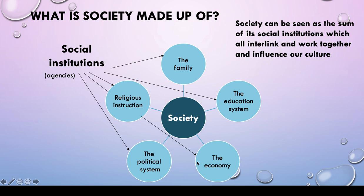This all contributes to the economy. We are in a capitalist system — how does that make us believe what we do in the family? For example, in America you have the American dream: you work hard and you're going to achieve it. Society can be seen as the sum of its social institutions, which all interlink and work together and influence our culture. As a functionalist, this is the organic analogy — as if society were organs, every single organ working together to make the whole human being survive, work, live, and be happy and harmonious.